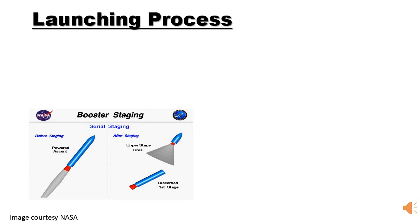There are two types of launching process. The first is Serial Staging. In Serial Staging, a small second stage rocket is placed on top of a larger first stage rocket. The first stage engine is extinguished, the second stage separates from the first stage, and the second stage is ignited.